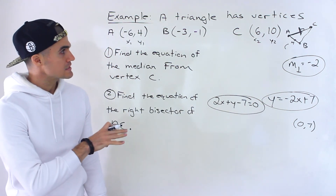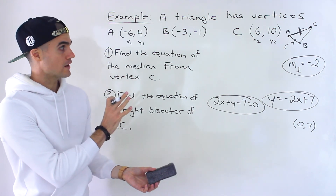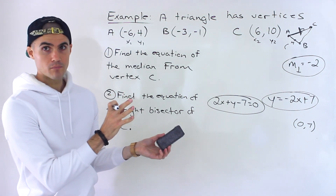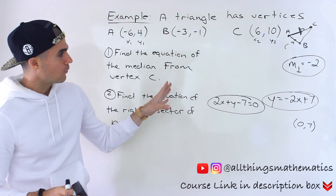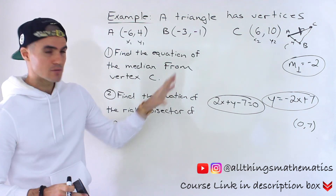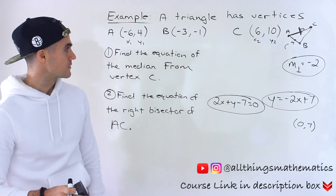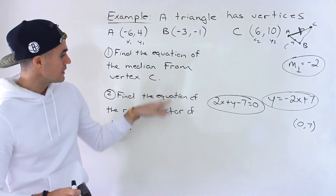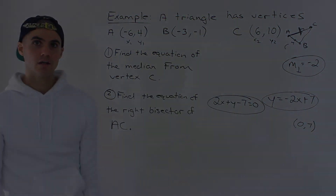So if you get something like this, I recommend drawing out the triangle on a rough diagram so you know what you're going for and can see what your target is. That's how you find the equation of a median and a right bisector given a triangle.